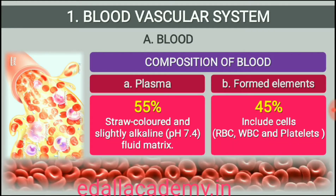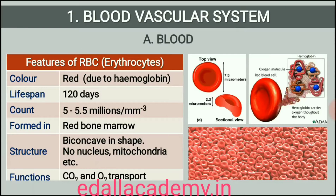Formed Elements. Erythrocytes, leukocytes and platelets are collectively called formed elements (figure 18.1) and they constitute nearly 45% of the blood. Erythrocytes or red blood cells (RBC) are the most abundant of all the cells in blood. A healthy adult man has, on an average, 5 million to 5.5 million RBCs per cubic millimeter of blood. RBCs are formed in the red bone marrow in the adults.